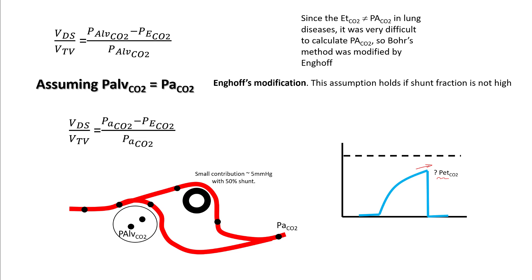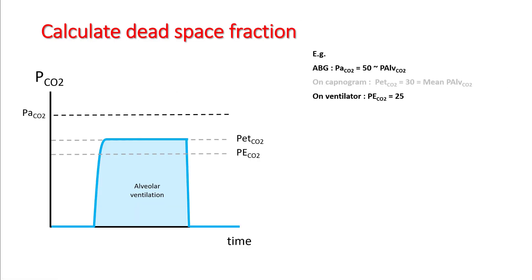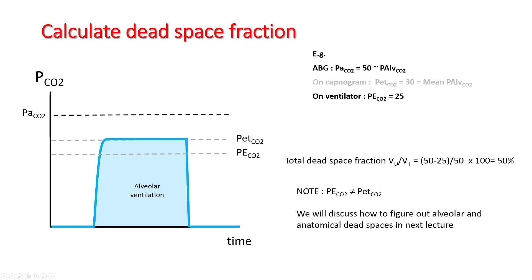So your Vd/Vt can be written as P arterial CO2 minus P end expiratory CO2, divided by P arterial CO2. For example, if you have to calculate dead space from an ABG where PaCO2 is around 50 — approximately equal to your P alveolar CO2 — and if you get your P end expiratory CO2 from your ventilator, say it's 25, your total dead space fraction will be 50 minus 25 divided by 50, which is 50%. Note that P end expiratory CO2 and P end tidal CO2 are very different numbers, and we'll understand the nuances in our next lecture.